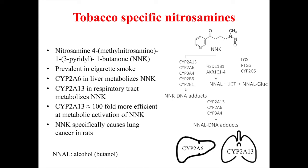NNK can be metabolized by a number of cytochrome P450 enzymes. Cytochrome P450 2A6 in the liver metabolizes NNK, but so does cytochrome P450 2A13 in the respiratory tract. Cytochrome P450 2A13 is a hundred-fold more efficient at metabolic activation of NNK, meaning it forms more toxic metabolites that can attach to DNA, forming adducts. NNK specifically causes lung cancer.